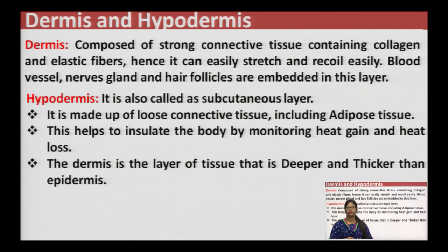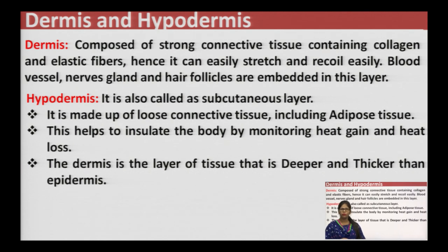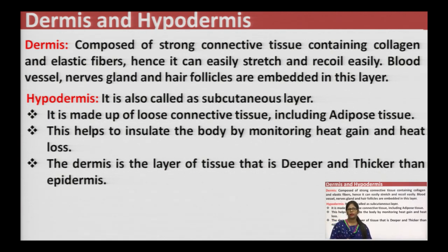Then dermis and hypodermis: in the dermis we have strong connective tissue with collagen and elastic fibers that have stretch and recoiling ability, along with blood vessels, nerves, glands, and hair follicles. This provides protection from mechanical shock due to the collagen fibers present. Further, hypodermis — which we call the subcutaneous layer — contains loose connective tissue along with adipose tissue (fat cells), which provides insulation, helping the body maintain heat. This layer is deeper and thicker compared to the epidermis.